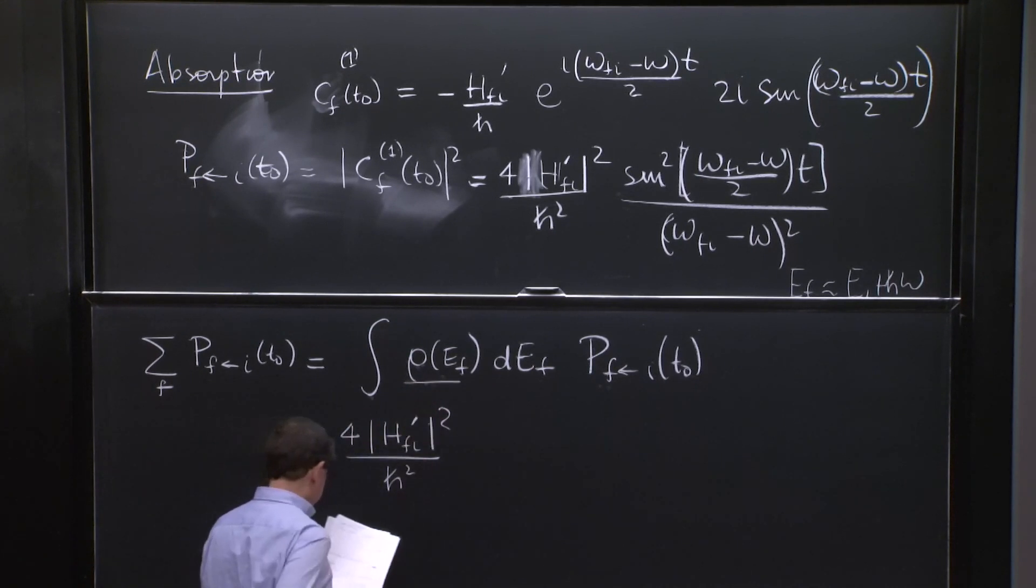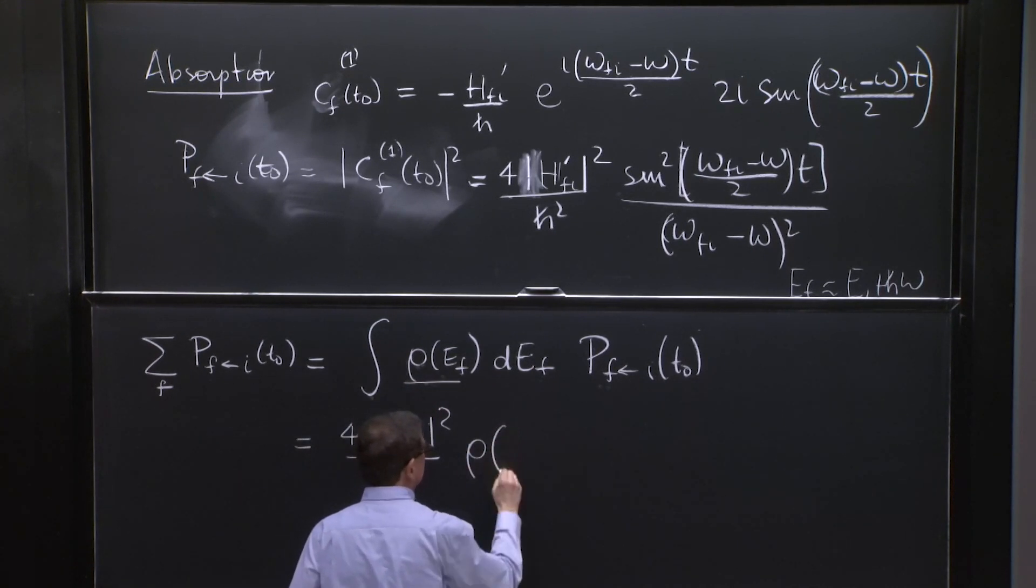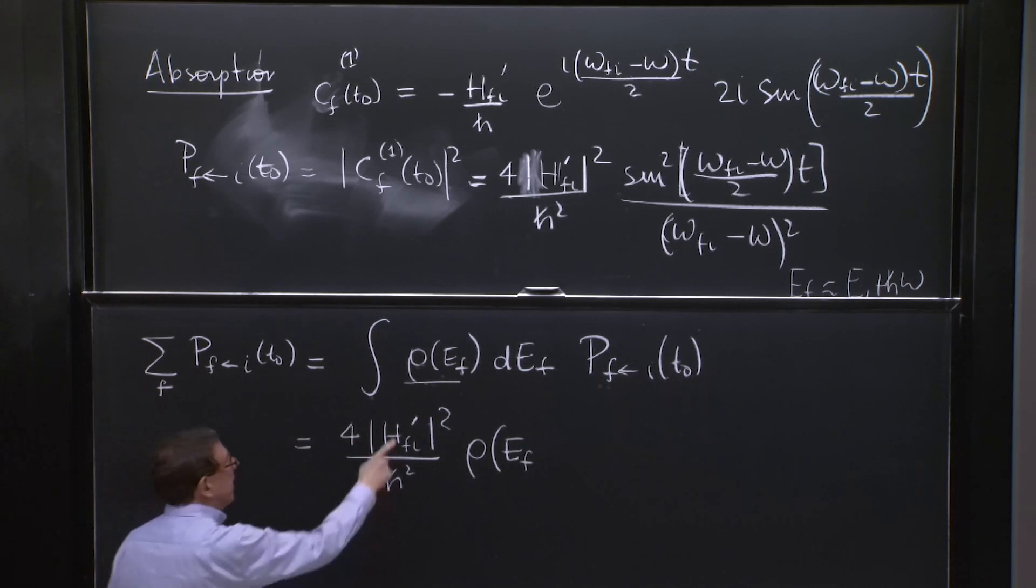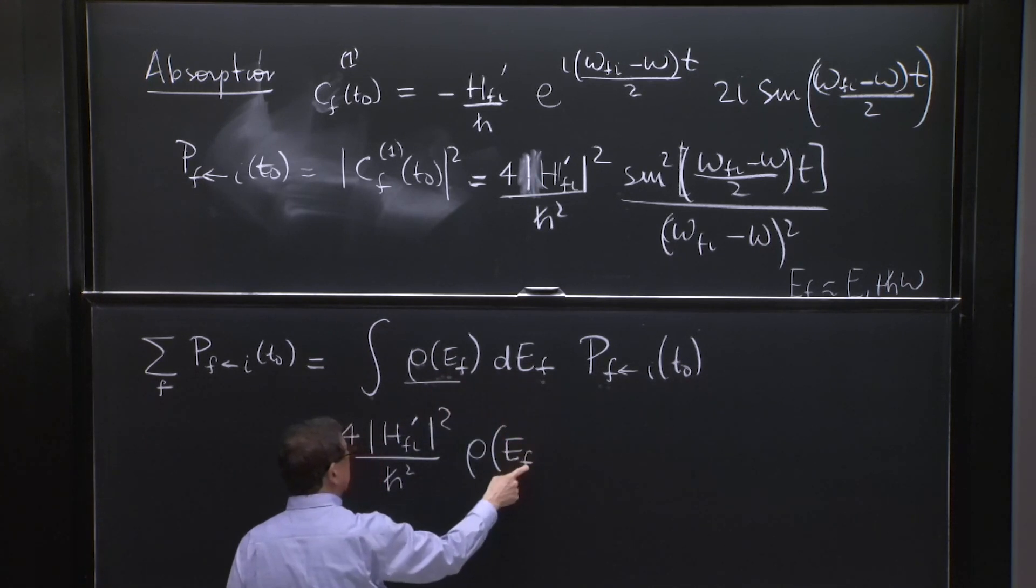That goes out. Then the rho of Ef goes out. So I'll write it rho of Ef. And rather than leaving it like Ef like that, because it seems like a variable still of integration, if I take it out, I should be explicit what this Ef is.